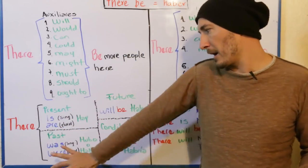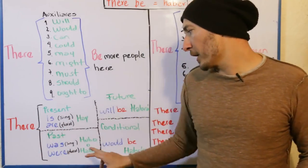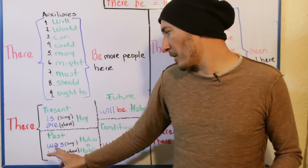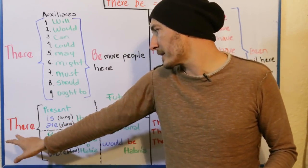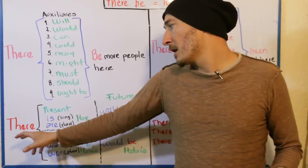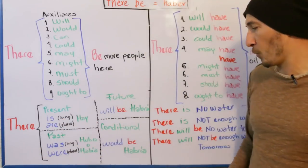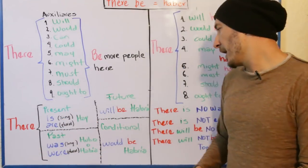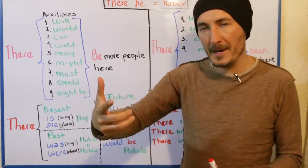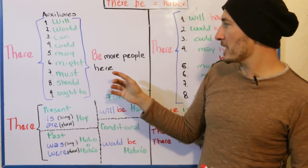En el pasado, simplemente lo mismo: there was a house, there were two houses. Si fuera pregunta: was there a house? Were there two houses? Was there a meeting? Were there any meetings? Was there any meeting? El futuro: will be — there will be a meeting, or there will be two meetings. Vamos a hacer el ejemplo con los auxiliares, con 'gente'. Hay más personas — there are more people. No puedo decir 'there is more people' porque 'people' es plural en inglés — en español es singular: hay mucha gente, pero en inglés sería 'many people'.